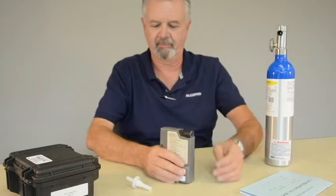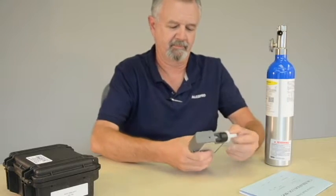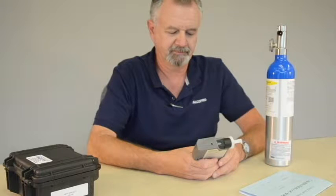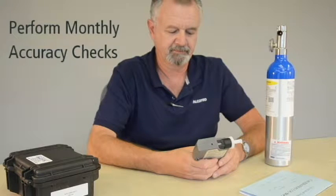An accuracy check is a test of your instrument's ability to read a known alcohol standard within a given tolerance level. A best practice is to perform accuracy checks once a month to document that your instrument is continuing to give accurate results.